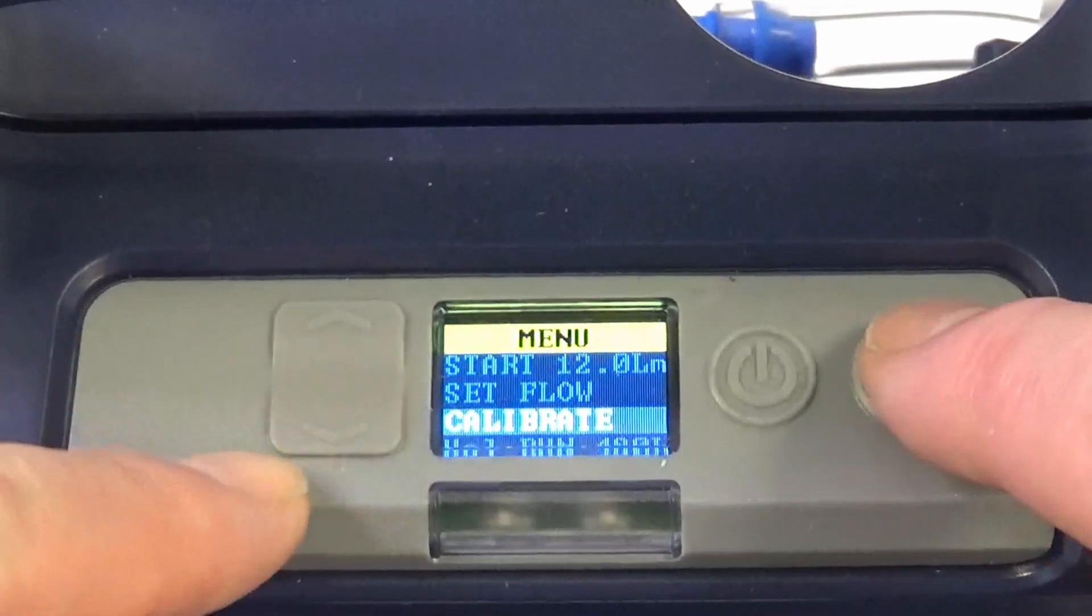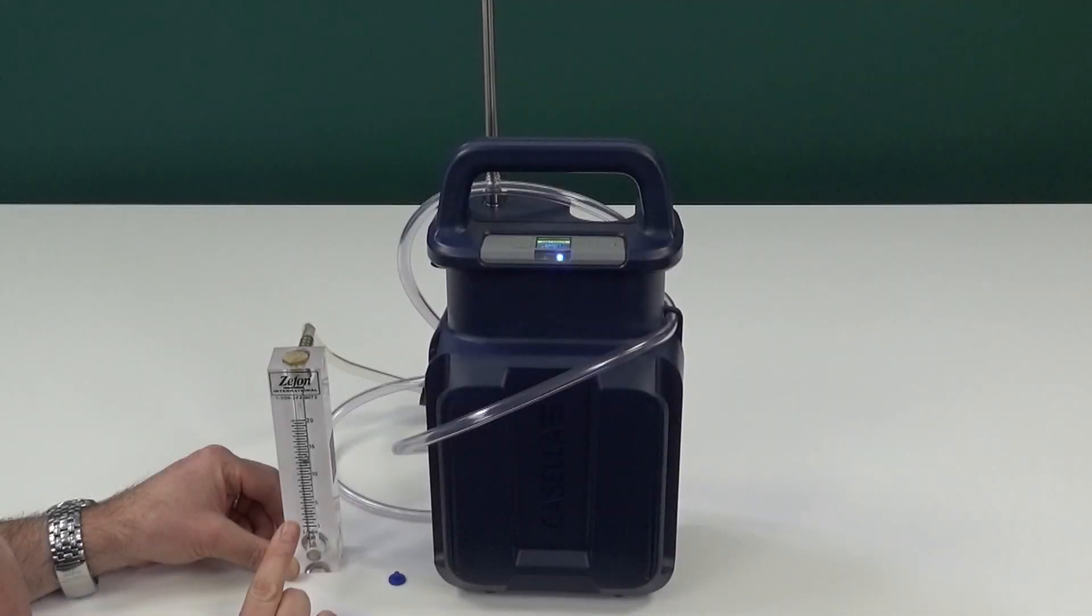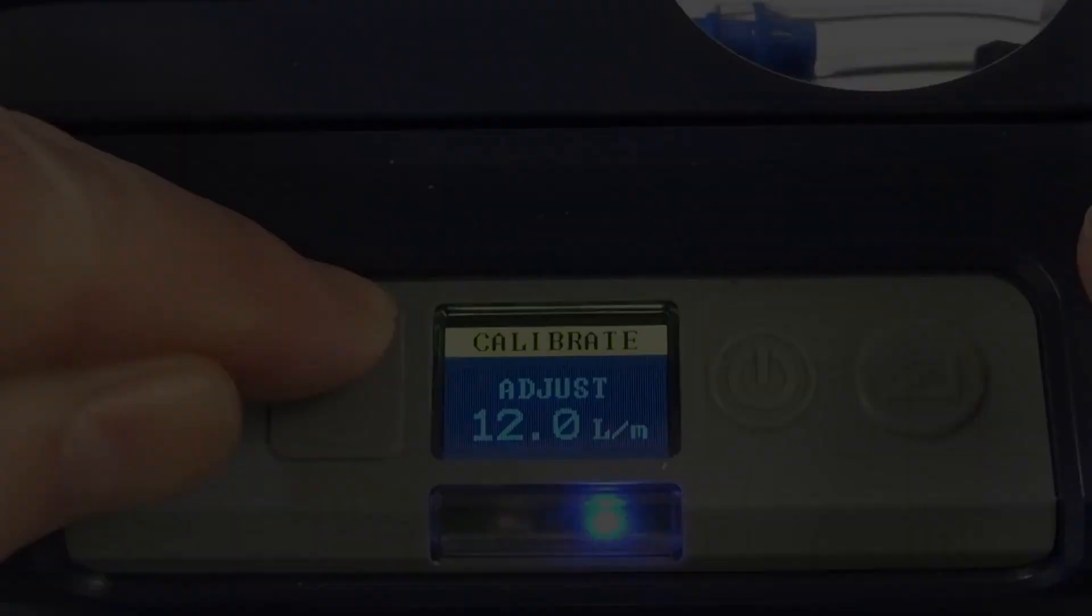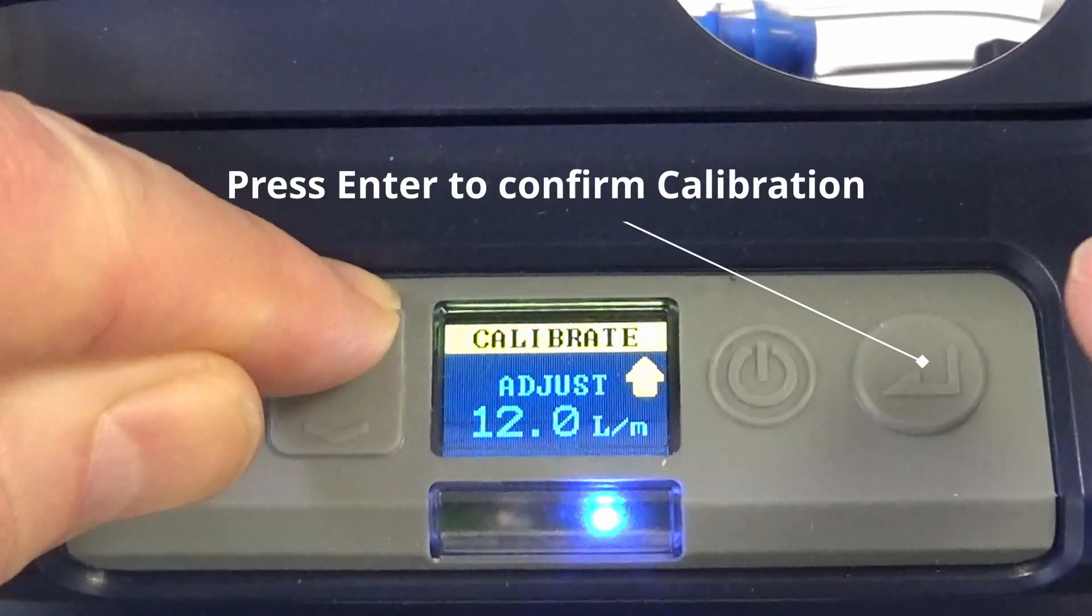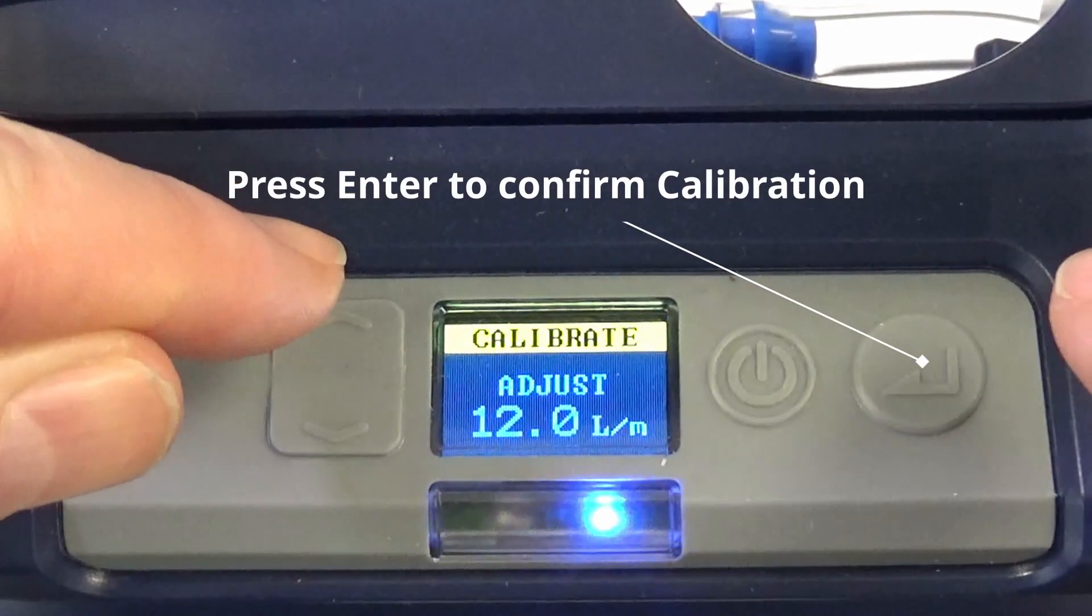Then select calibrate from the menu and, reading the flow from the centre of the bob on the rotameter at eye level, use the up and down cursors to adjust the flow to the required level.